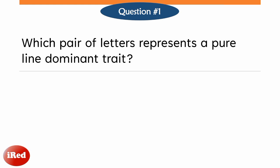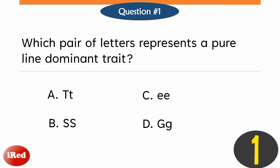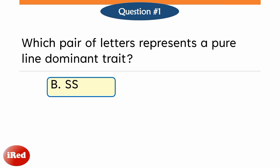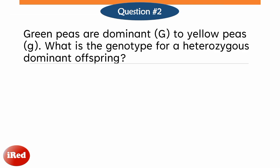Which pair of letters represents a pure line dominant trait? The correct answer is letter B. Capital letters represent dominant alleles and lowercase letters represent recessive alleles. Pure line dominant means the alleles for a particular trait are both dominant, which are written in capital letters. Green peas are dominant to yellow peas.